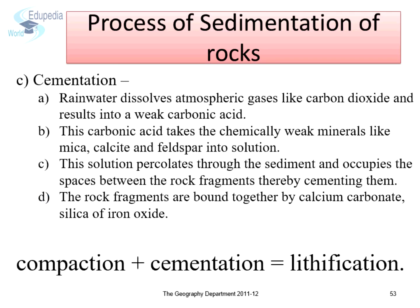Cementation: in this process, the rock fragments are bound together by calcium carbonate, silica, or iron oxide. Rainwater dissolves atmospheric gases like carbon dioxide and results in a weak carbonic acid. This carbonic acid takes chemically weak minerals like mica, calcite, and feldspar into solution. This solution percolates through the sediments and occupies the space between the rock fragments, thereby cementing them. The processes of compaction and cementation are often named collectively as lithification.